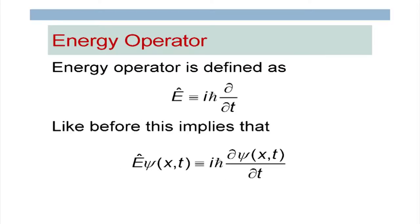Once we have defined the operators, the equation we obtained can be represented in operator form. A square of an operator means the operator operates twice — not that you square the result, but that it operates twice. So px² means first you operate px, and then you operate px on the outcome again. That is how operators are defined.